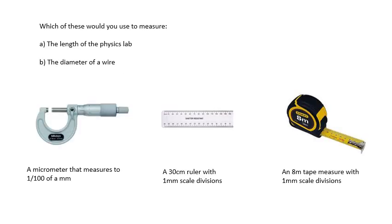Look at this. Imagine I want to measure the length of the physics lab or I want to measure the diameter of a wire. The diameter of a wire, length of the physics lab, which one of those would you choose? And it should be pretty obvious for the diameter of a wire, you need a micrometer.